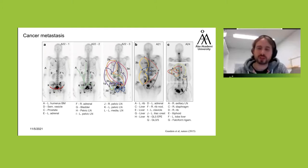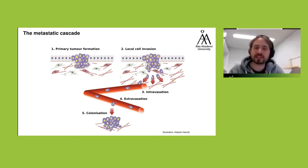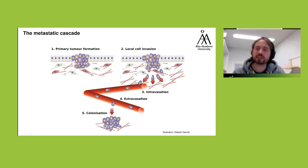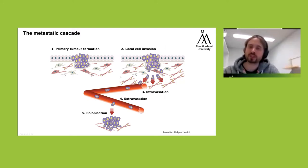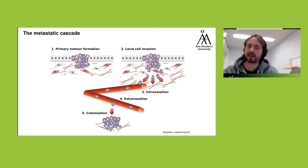Cancer metastasis has several key steps, especially for solid tumors. First, you have formation of a primary tumor encapsulated within the basement membrane, which acts as a barrier. The cancer cells then somehow breach this basement membrane and migrate into the surrounding stroma, closely interacting with the complex environment. They then reach the vasculature through intravasation, survive in the bloodstream or lymphatics, interact with endothelial cells at distal sites, attach, and extravasate to colonize distal organs and form metastatic lesions.